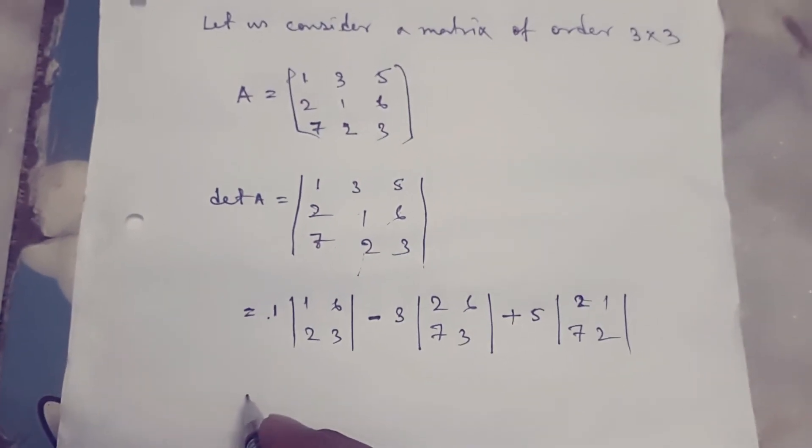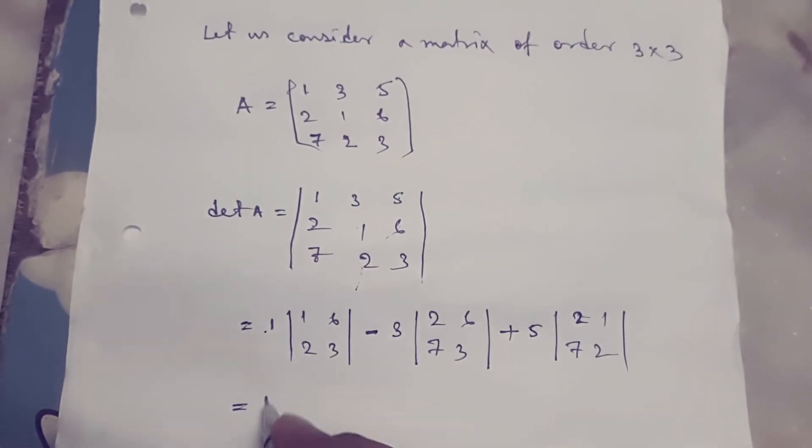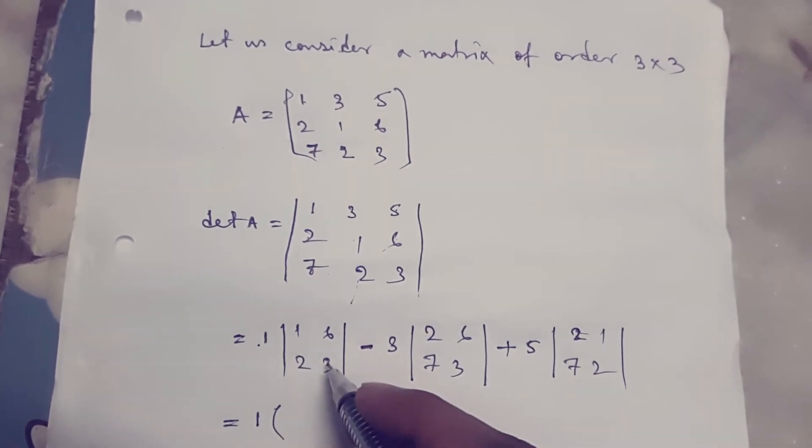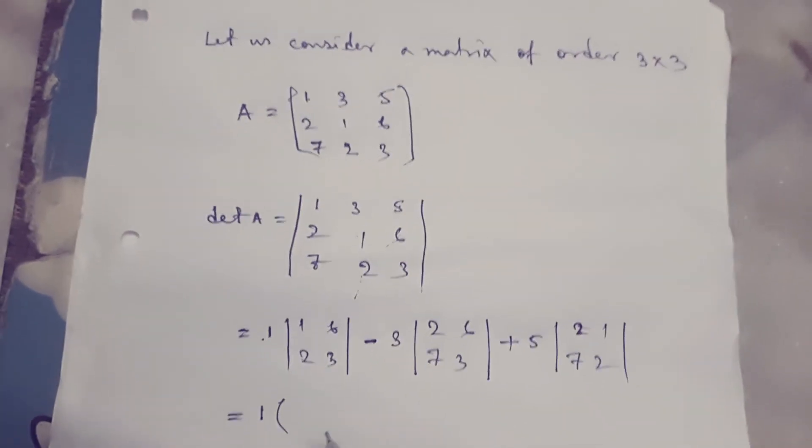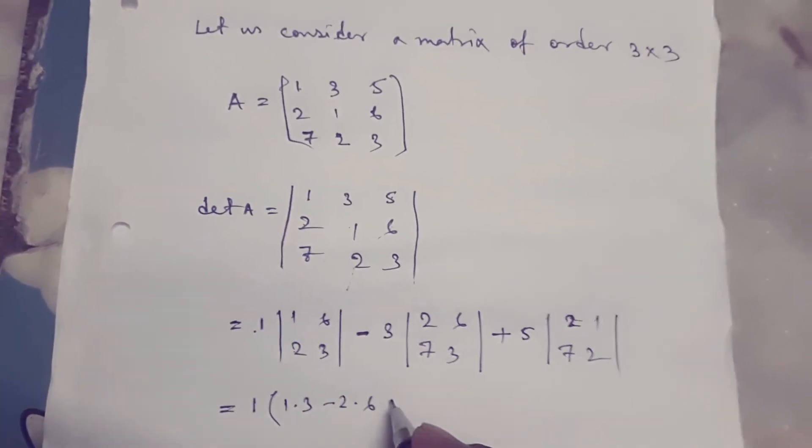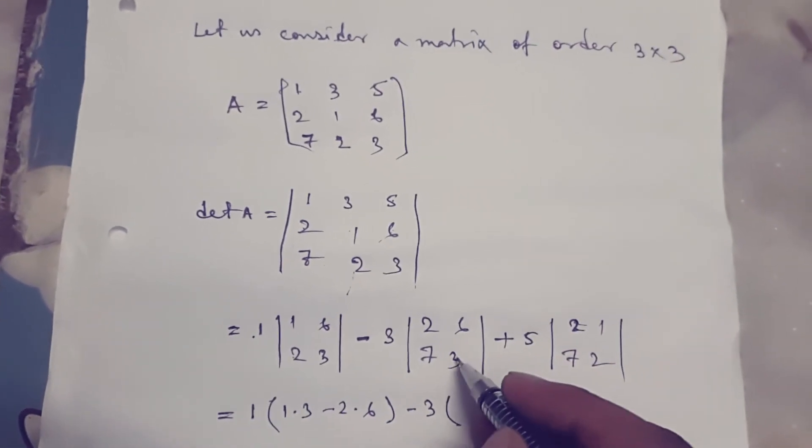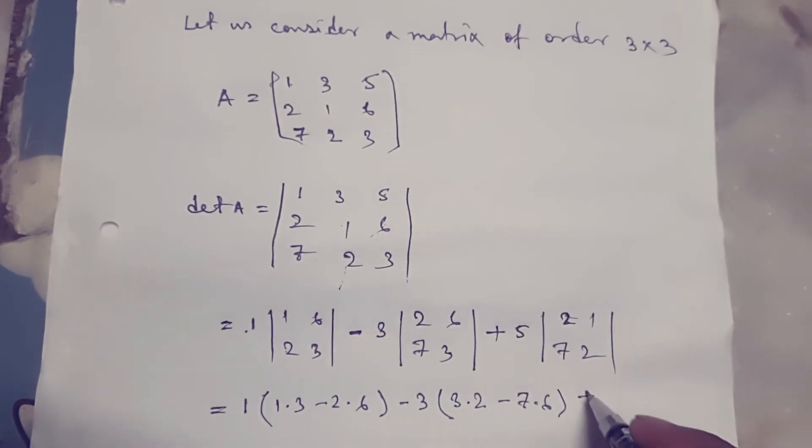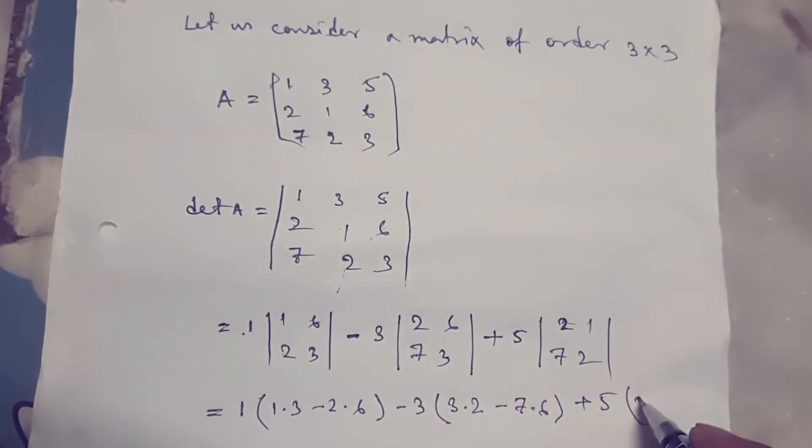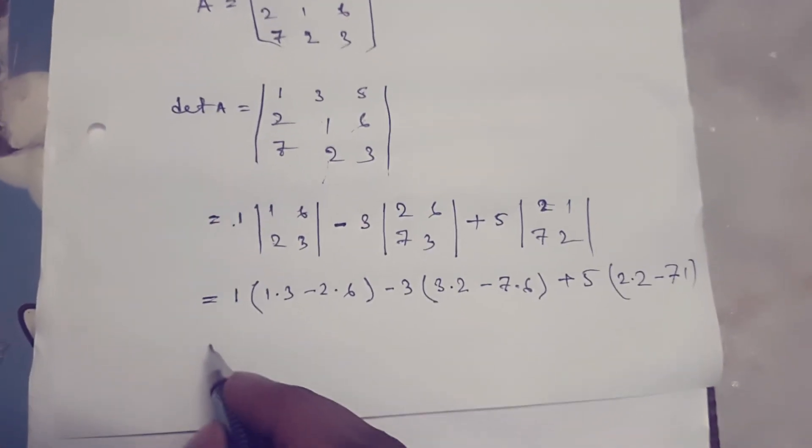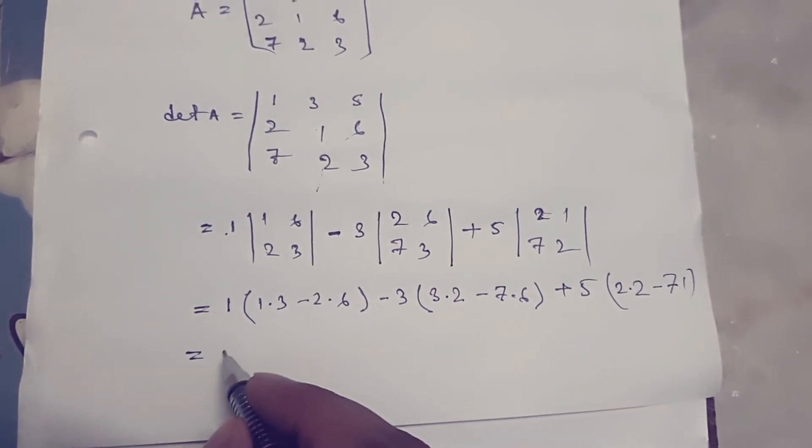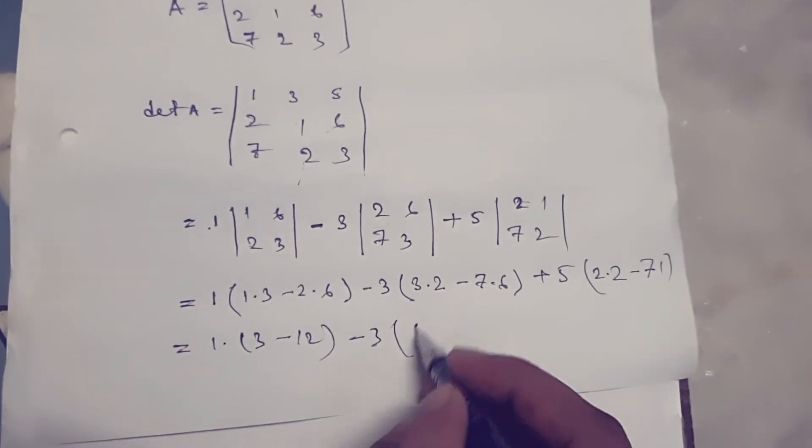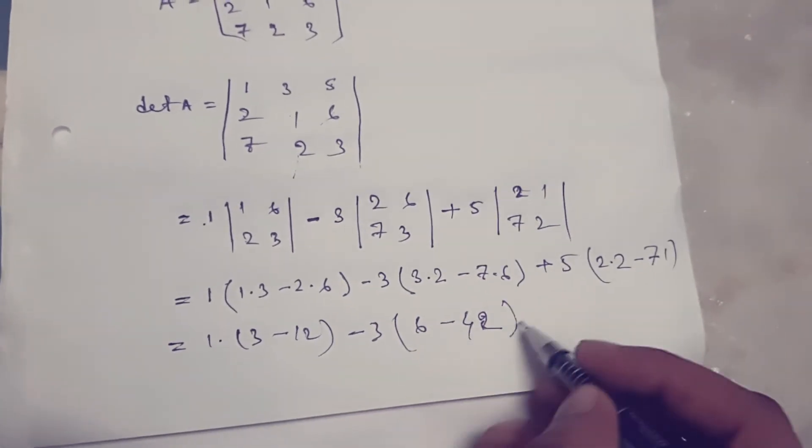Now we find out the value. Students keep in mind: first multiply 3 and 1, then minus sign, then multiply 2 and 6. So 1 times (3 minus 12), minus 3 times (6 minus 42), plus 5 times (4 minus 7).